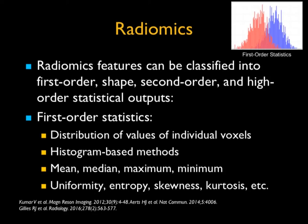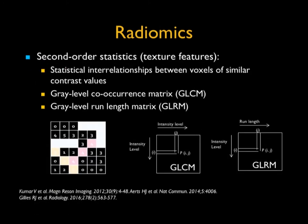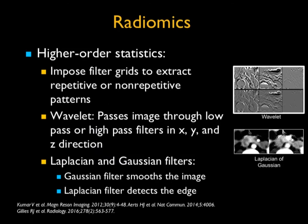Radiomics is a bit of a black box we're trying to unravel. You can have first-order statistics — the distribution of individual voxel values, histogram-based methods: mean, median, maximum, minimum, kurtosis, entropy, skewness — then second-order features, the interrelationships between voxels of similar values, co-occurrence matrices, grayscale-level run length matrices. And higher-order statistics use different filter grids, different wavelengths, Laplacian and Gaussian filters to enhance variation between normal and abnormal tissues, allowing you to detect normal, predict what the tumor is, predict optimal management, and predict outcomes.